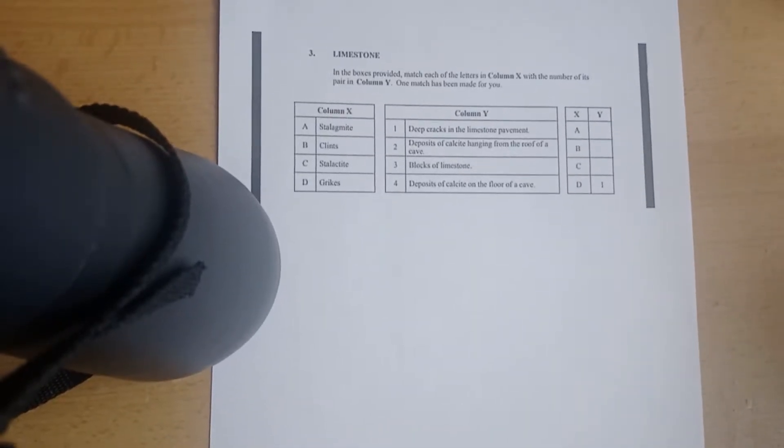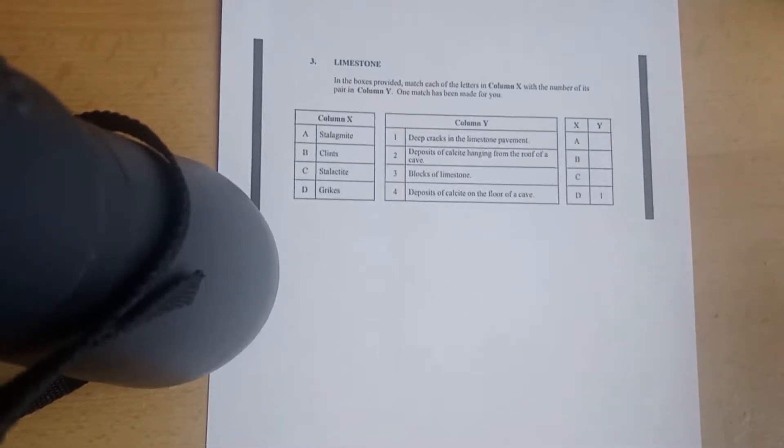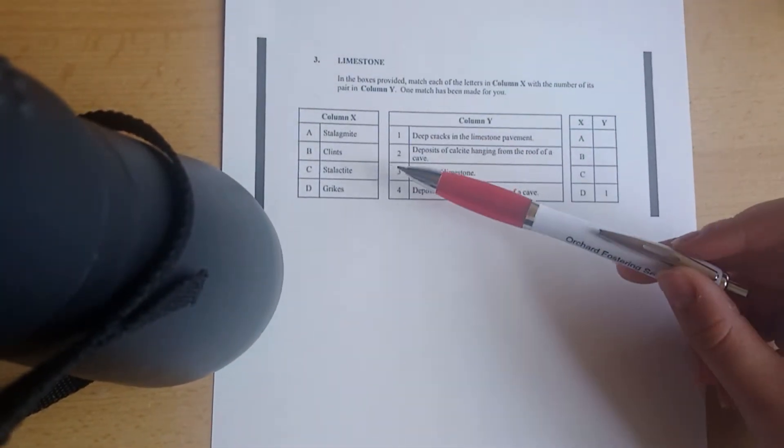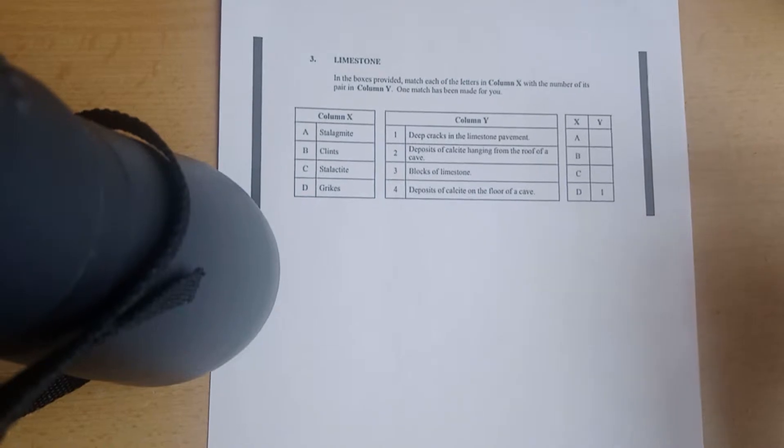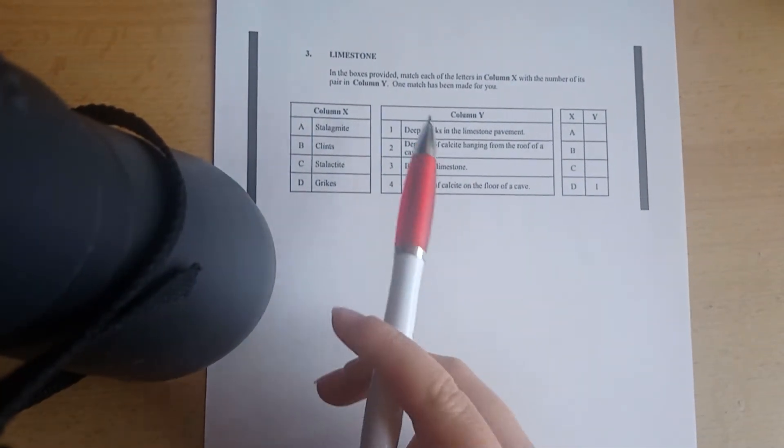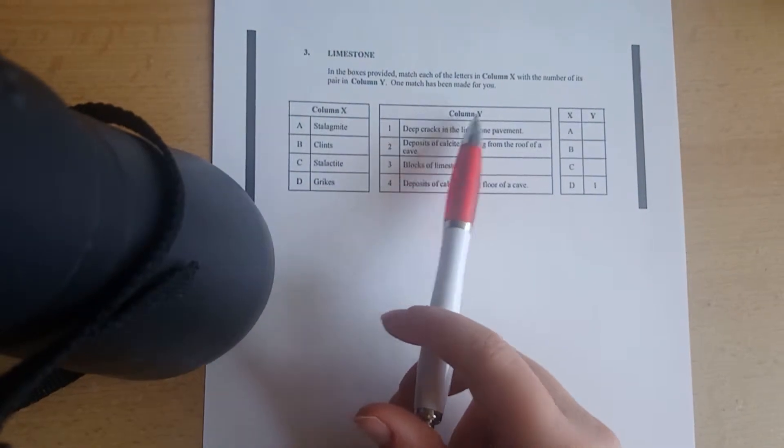Here we have a short question from the 2012 geography paper on limestone, actually on the features of a karst region, so limestone features basically. We just have to match column X to column Y and we already have one done for us.